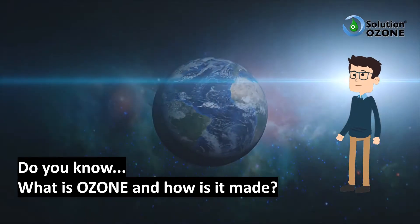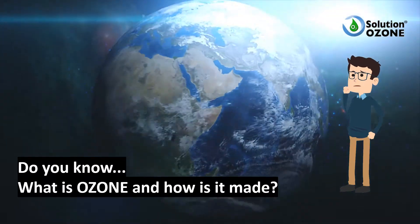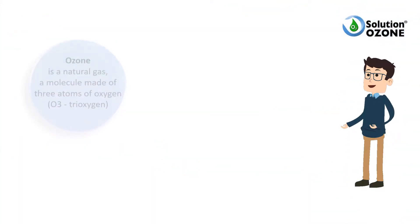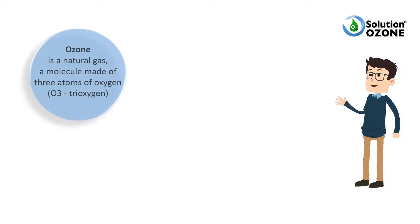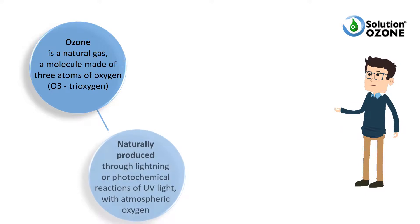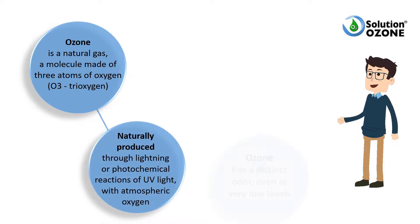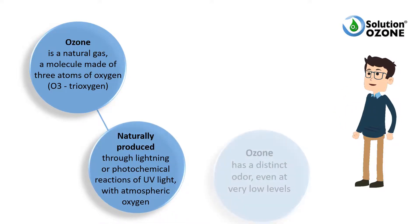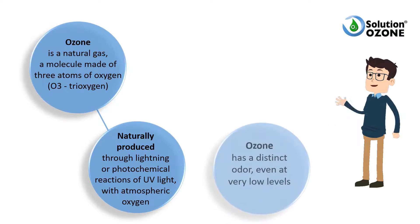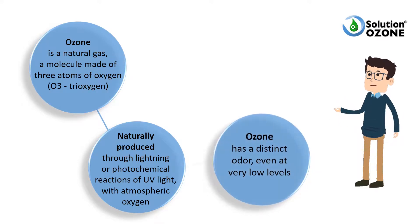Do you know what is ozone and how is it made? Ozone is a natural gas, a molecule made of three atoms of oxygen, naturally produced through lightning or photochemical reactions of UV light with atmospheric oxygen. At low concentrations, ozone is colorless and has a distinct odor that is sometimes associated with a clean smell.